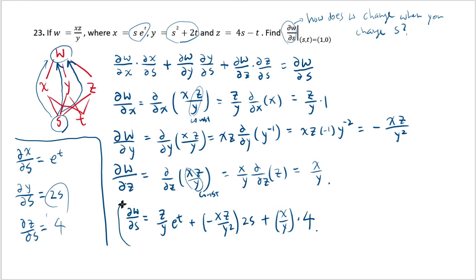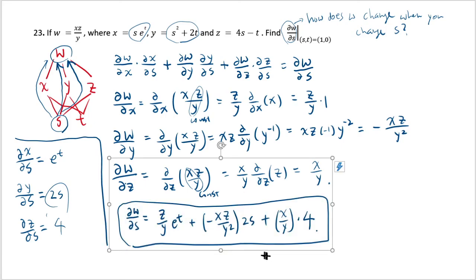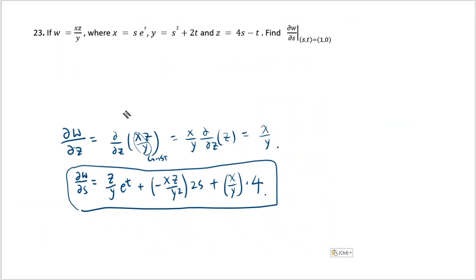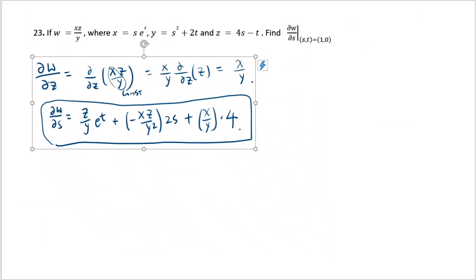So we're very close to the answer, except I still need to evaluate this at s and t being 1, 0. So let's copy this. I'll just remove everything, and we have this.